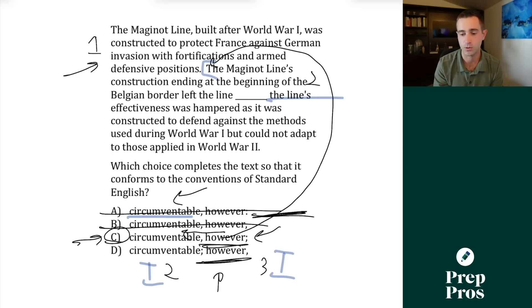That's how we can see that C is correct. There is not a contrast between sentence two and sentence three. Sentence two says it was circumventable. People could get around it. And then we talk about other things that are hampering, reducing the effectiveness of it. So this would be like a furthermore or something if we're going to use a transition there.